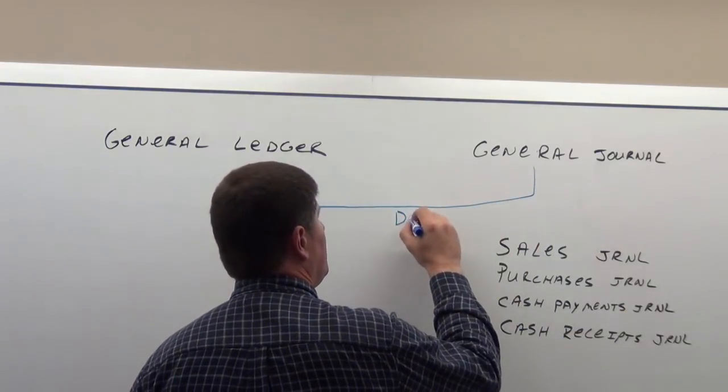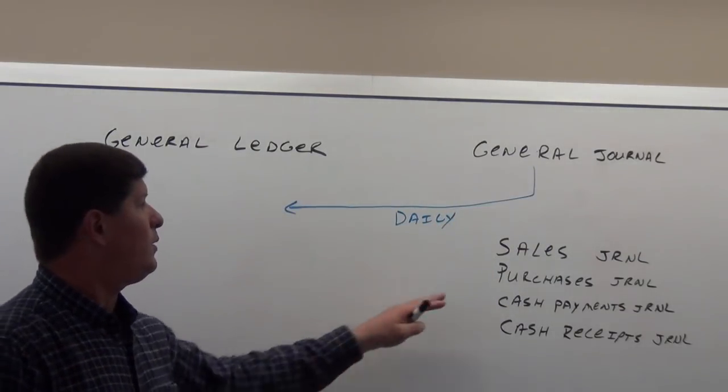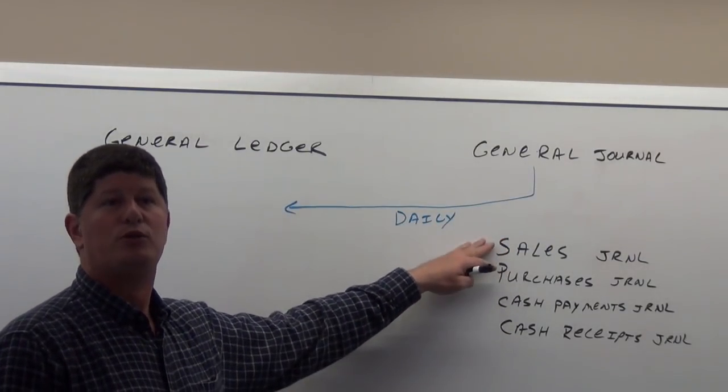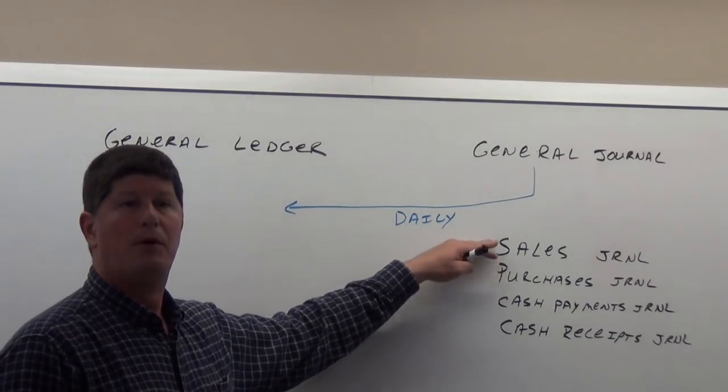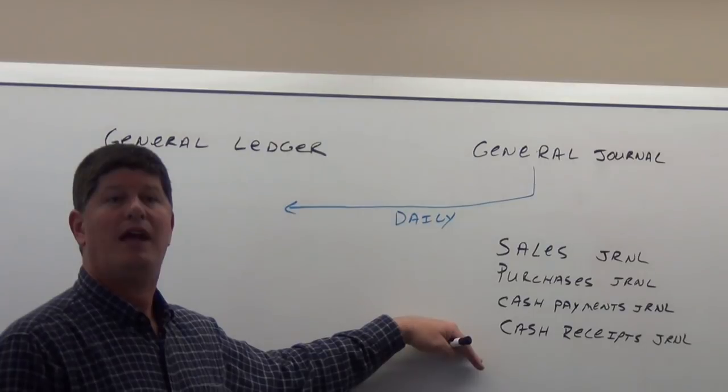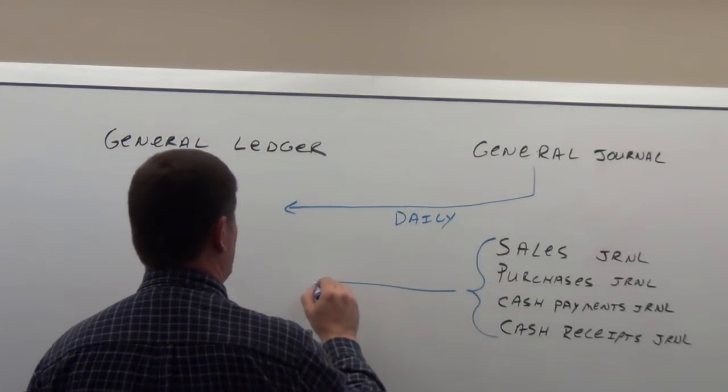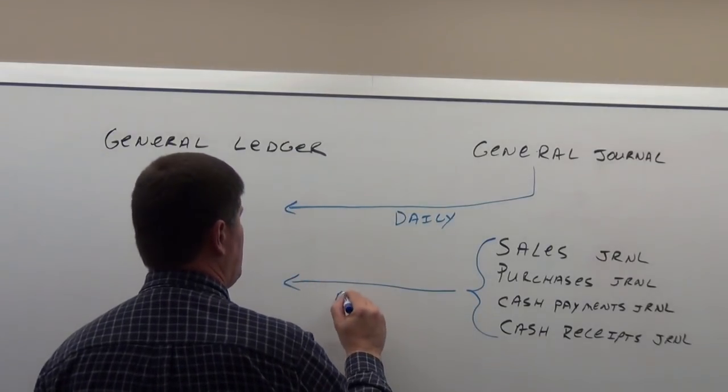We will still have transactions that go in the general journal and then get posted to the general ledger every day. But what we're using now are these special journals where they get posted all month long, and then we summarize it at the end of the month and we post those special journals to the general ledger, but we only do it monthly.